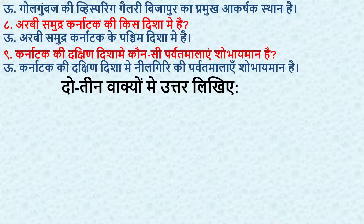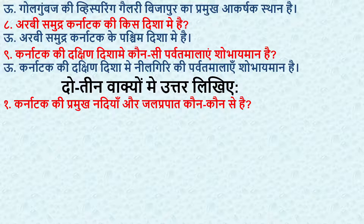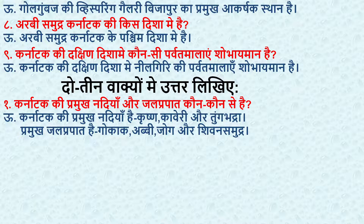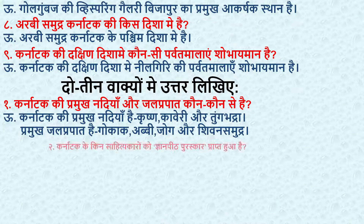Now, answer in two to three sentences. First question — Karnataka ki pramukh nadiyan aur jalprapat kaun kaun se hai? What are the major rivers and waterfalls of Karnataka? Answer: Karnataka ki pramukh nadiyan hain Krishna, Kaveri aur Tungabhadra. Pramukh jalprapat hain Gokak, Abbi, Jog aur Shivana Samudra. The rivers of Karnataka are Krishna, Kaveri, and Tungabhadra, and the major waterfalls are Gokak, Abbi, Jog Falls, and Shivana Samudra.